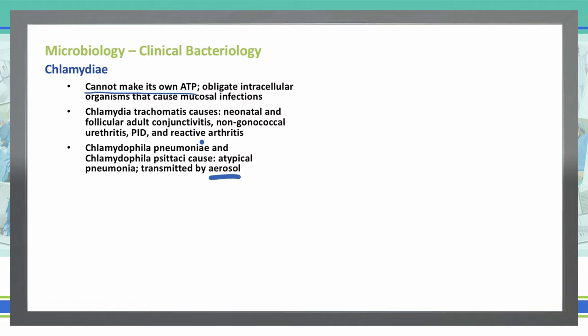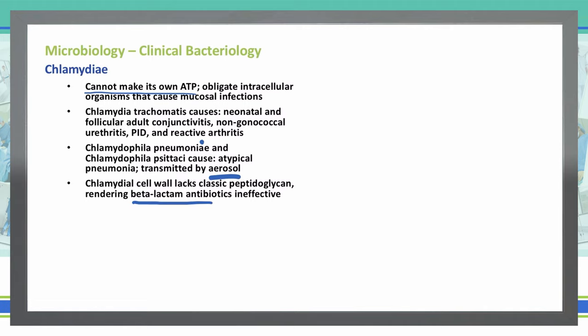Some facts about chlamydia: it has a cell wall that lacks peptidoglycan, which means beta-lactam antibiotics will be ineffective. Those beta-lactam antibiotics try to attack the peptidoglycan on the cell wall and destroy it, but without peptidoglycan, we can't use beta-lactam antibiotics.